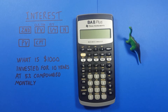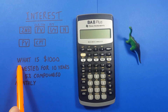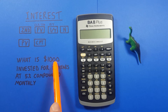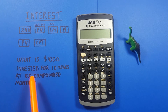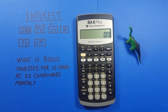We can use these functions to determine how much we'll have at the end of an investment that compounds either monthly, annually, or however we want to calculate it. For an initial example: what if we had $1,000 invested for 10 years at 5% compounded monthly? How much would we end up with? To solve this we can use the time value of money keys.